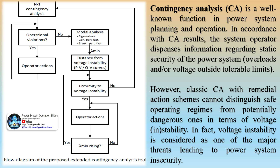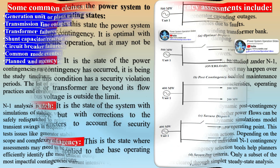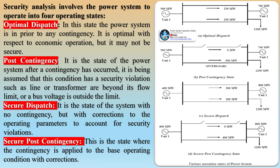Contingency evaluation similarly uses the performance index to identify the worst contingencies, focusing on violations of bus voltages and power. The most common types of contingencies in power systems include: one, loss of a transmission component; two, loss of a generating unit; and three, equipment failure.